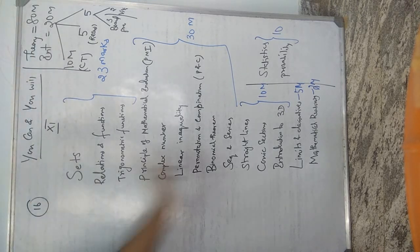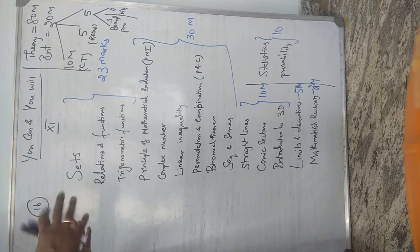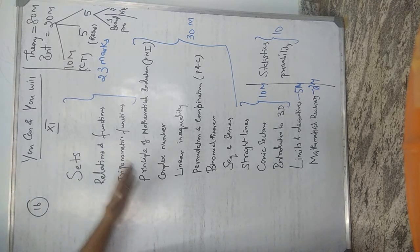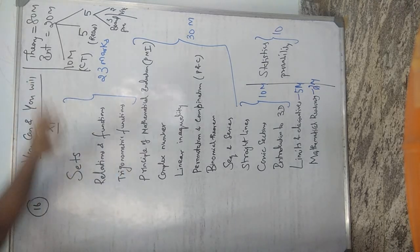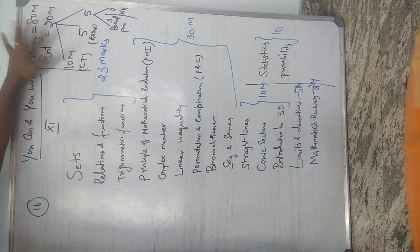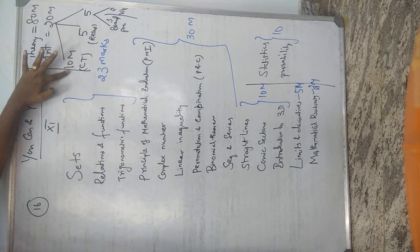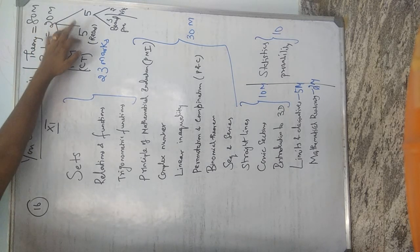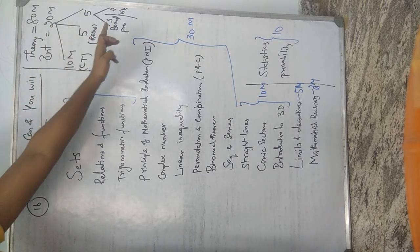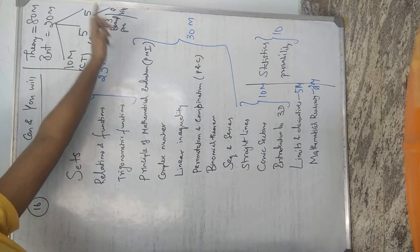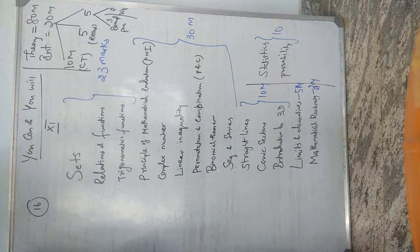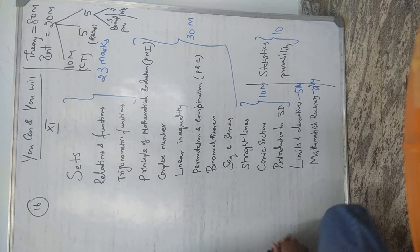To repeat: 80 marks for theory based on 16 chapters (Class 12 has 13 chapters). For Class 11, internal marks are 20 total — 10 for class tests, 5 for record note, and the remaining 5 split into 3 for board practical and 2 for viva.